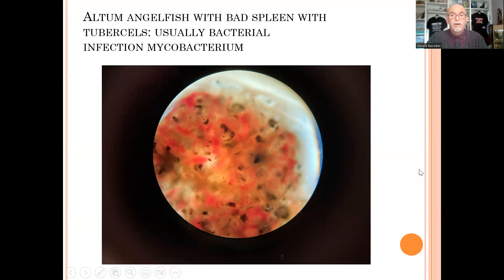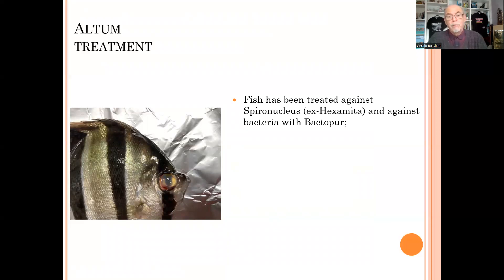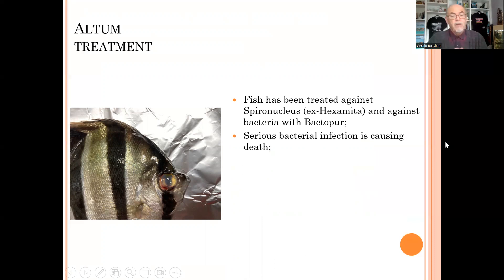The altum which suffered from this bacterial infection had luckily already been treated before against Spironucleus — Hexamita is the old name — and it was also treated against bacteria with Bactopor. But these bacteria seemed not to be controlled by this kind of treatment. The Spironucleus may have caused a secondary bacterial infection, which might have caused the death. So you should know that if you have a Spironucleus or Hexamita infection, those parasites inside the intestine can lead to a secondary bacterial infection.